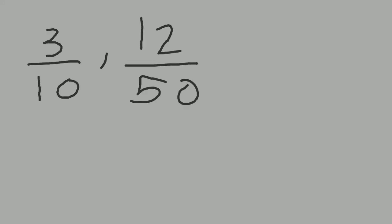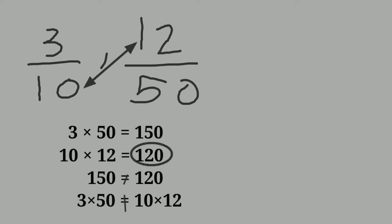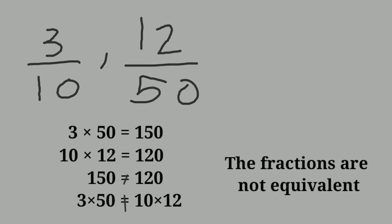Check whether 3 by 10 and 12 by 15 are equivalent fractions. Cross multiply: 3 into 15 equals 45, and 10 into 12 equals 120. Since 45 is not equal to 120, the given fractions are not equivalent.